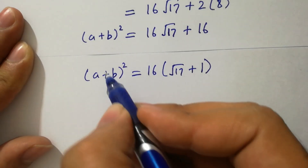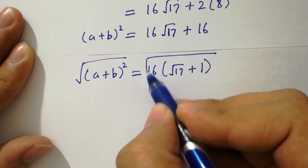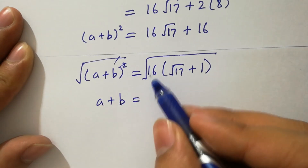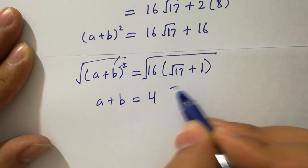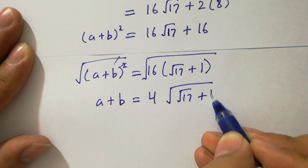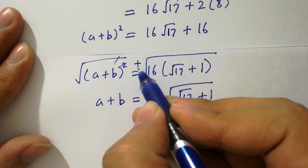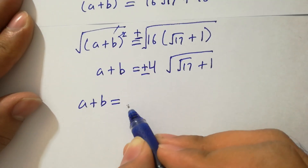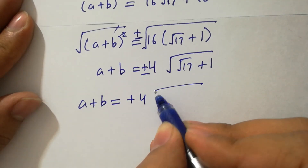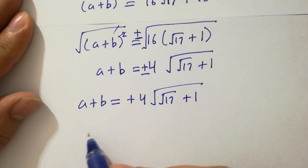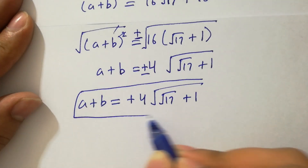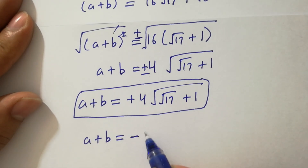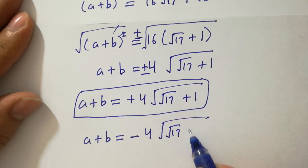To find a plus b, take square root on both sides. Square root of 16 is 4. So a plus b equals plus 4 times square root of the quantity root 17 plus 1, and also a plus b equals minus 4 times square root of the quantity root 17 plus 1.